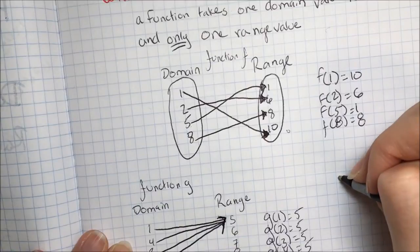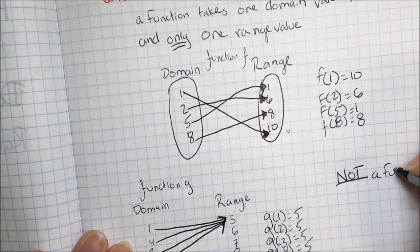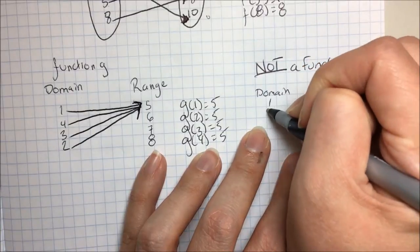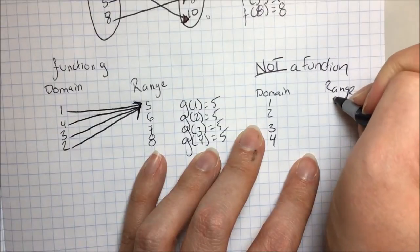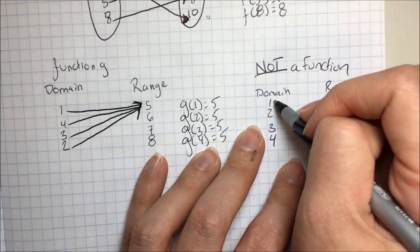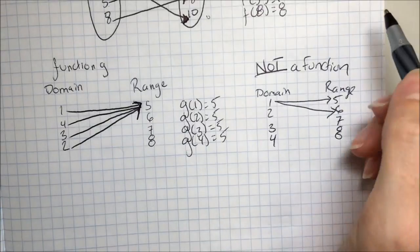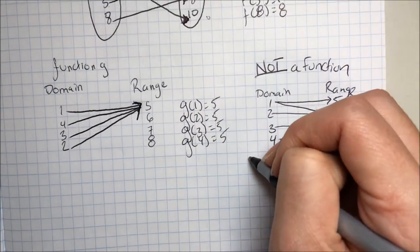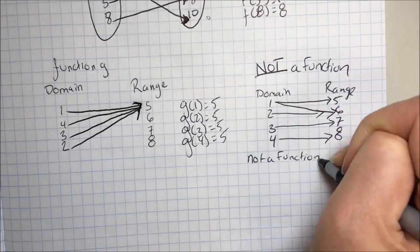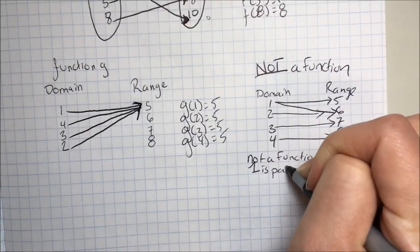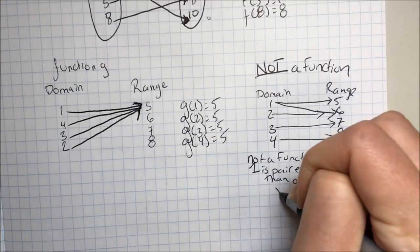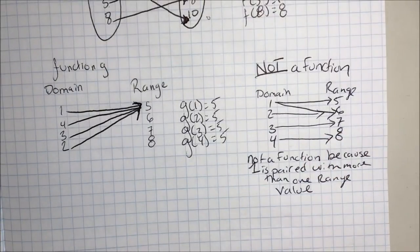Now an example of something that's not a function. Let's say my domain is 1, 2, 3, 4 again, and my range is 5, 6, 7, 8. If 1 went to 5 and also to 6, while 2 went to 6, 3 went to 7, and 4 went to 8 — this is not a function. This is not a function because 1 is paired with more than one range value.